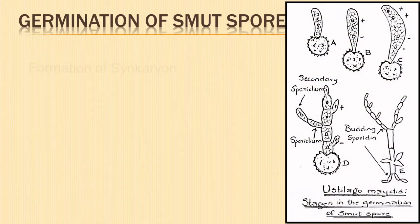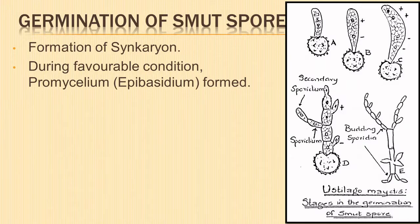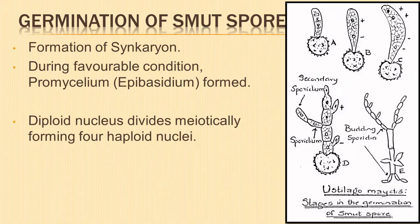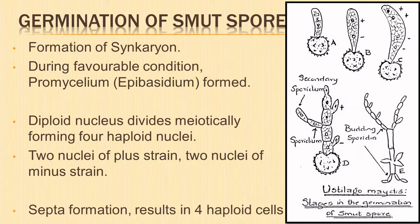The smut spores can be dispersed by wind, insects, or water. Only a small rachis persists on the infected ear after dispersal. Prior to germination, the two nuclei of opposite strains fuse to form a synkaryon. During favorable conditions, the spore absorbs moisture, swells up, and the exosporium ruptures; the endosporium comes out as a short promycelium or epibasidium. The diploid nucleus migrates into the promycelium and divides meiotically, resulting in four haploid nuclei — two of plus strain and two of minus strain.